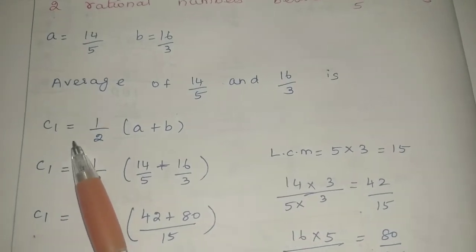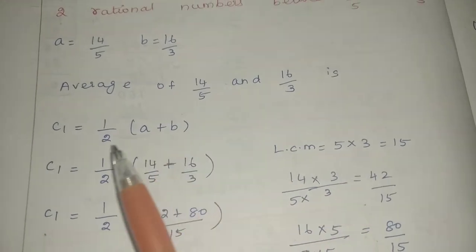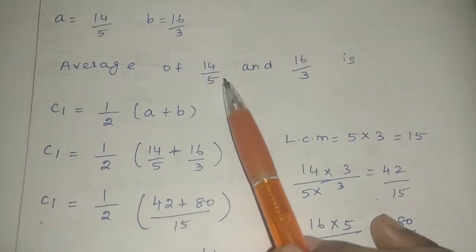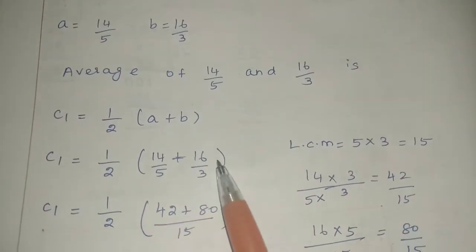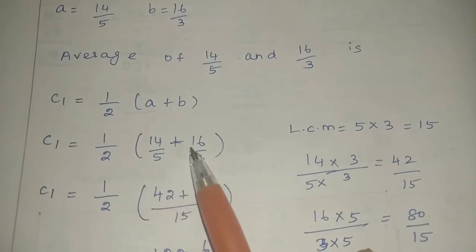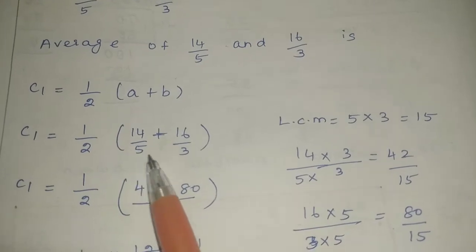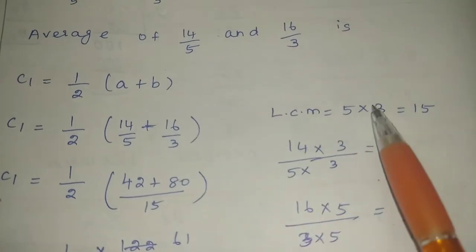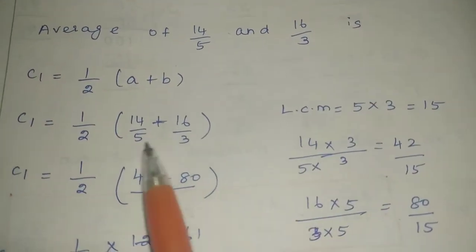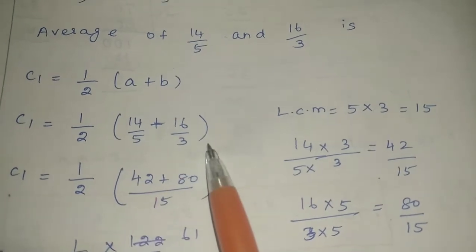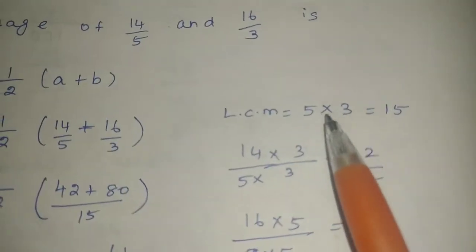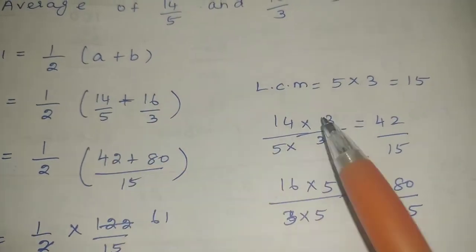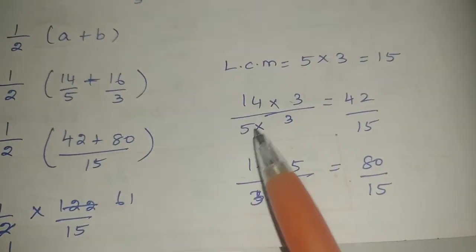C1 is equal to half into A plus B. First value: A is 14 by 5, B is 16 by 3. The denominator is different, so what we do is take the LCM of 5 and 3. LCM of 5 and 3 is 15.